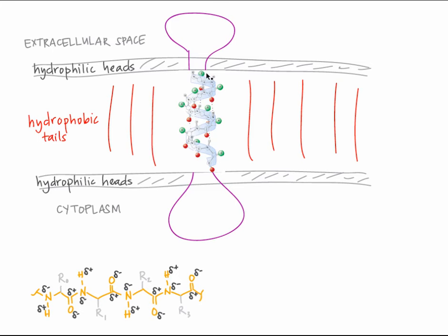In single-pass transmembrane proteins, favorable interactions between partially charged atoms at the backbone can be maximized by forming an alpha helix. The backbone, highlighted in blue, coils around so that hydrogen bonds form between partially negative oxygen atoms and partially positive hydrogen atoms. Hydrophobic side chains, shown in green, project out into the hydrophobic phospholipid tails, while all hydrophilic atoms of the backbone are tucked inside the alpha helix, maximizing favorable interactions. Typically, this transmembrane alpha helix is 20 to 25 amino acids long, matching the length of the hydrophobic section of the lipid bilayer.